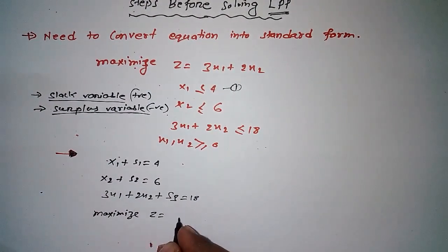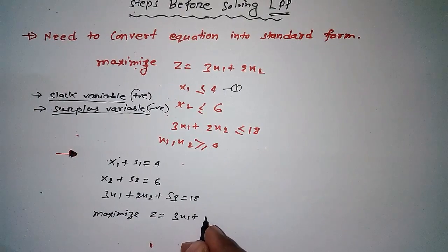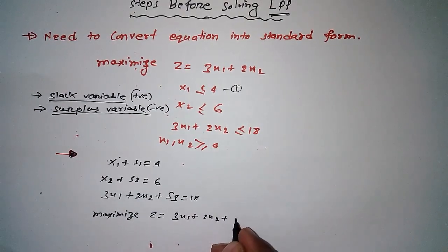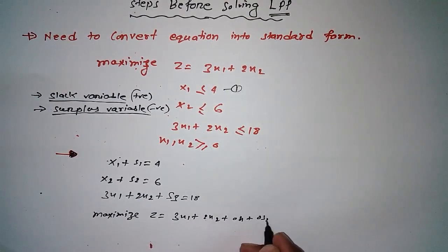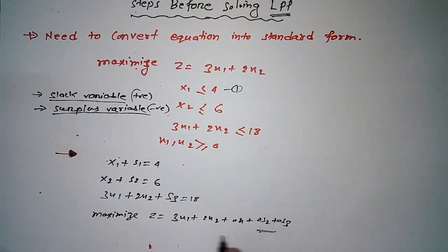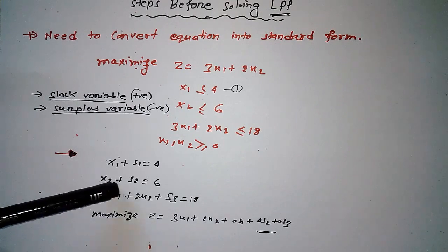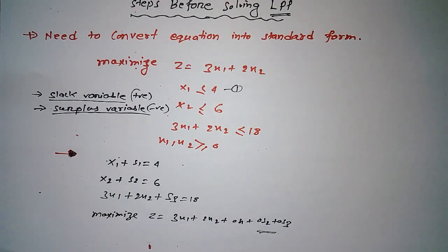maximize Z is equal to 3X1 plus 2X2 plus 0S1 plus 0S2 plus 0S3. Well, this is the equation we need to convert the given equation in the question to, like this, before solving LPP problem.